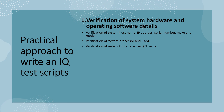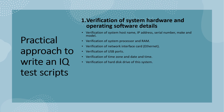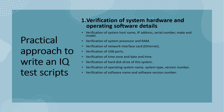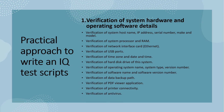Next is verification of network interface card, that is called Ethernet. Next is verification of USB ports — how many USB ports are available in the system. Next is verification of time zone as per the respective country and the current date and time. Next is verification of hard disk and its capacity. Next is verification of operating system name, type, and version number. Next is verification of software name and software version number, verification of electronic data backup path, verification of PDF viewer application, verification of printer connectivity, and verification of the antivirus installed.